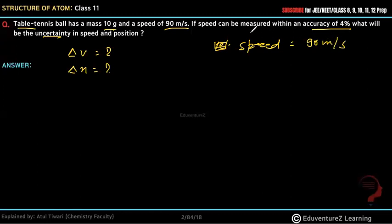Velocity can be measured within an accuracy of 4%. If the speed is 90, then 90 into 4 by 100, this is 3.6 meter per second. This is our delta V.